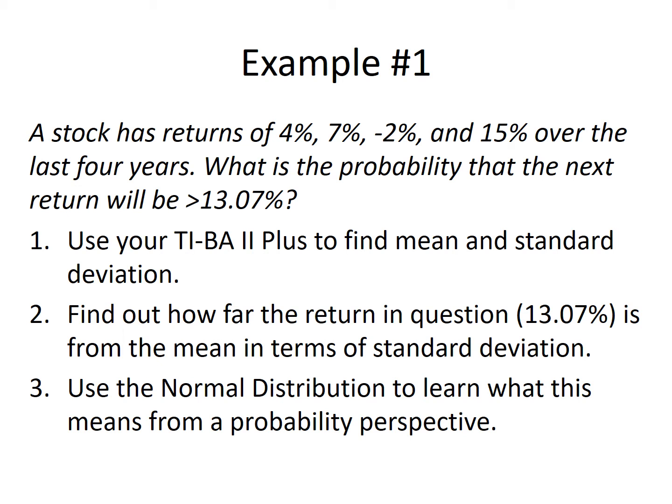In other words, how many standard deviations away from the mean is 13.07%. And then finally, we're going to use the normal distribution to learn what this means from a probability perspective.